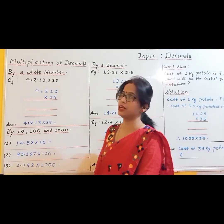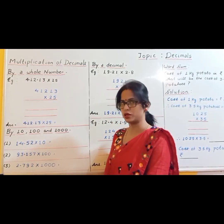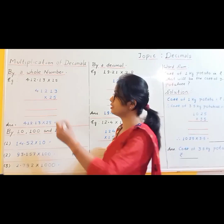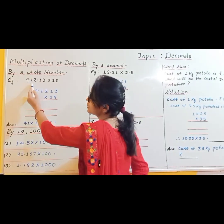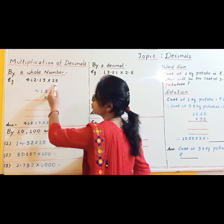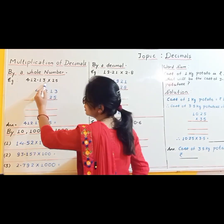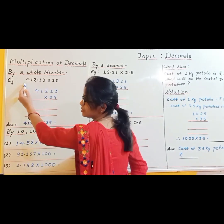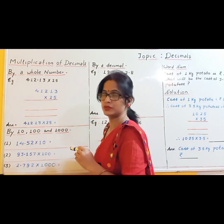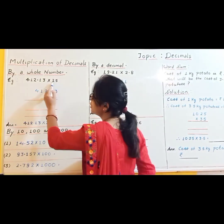First of all, we will learn multiplication of decimals by a whole number. Let's see the example. Here the example is 412.13 into 25. In this example, 412.13 is a decimal and 25 is a whole number, so we have to multiply a decimal by a whole number.